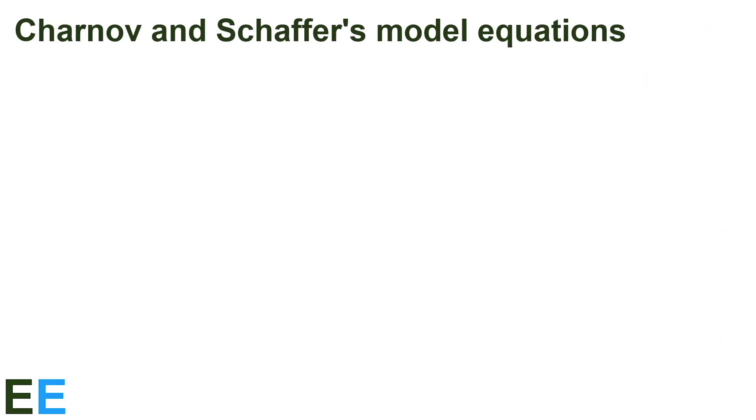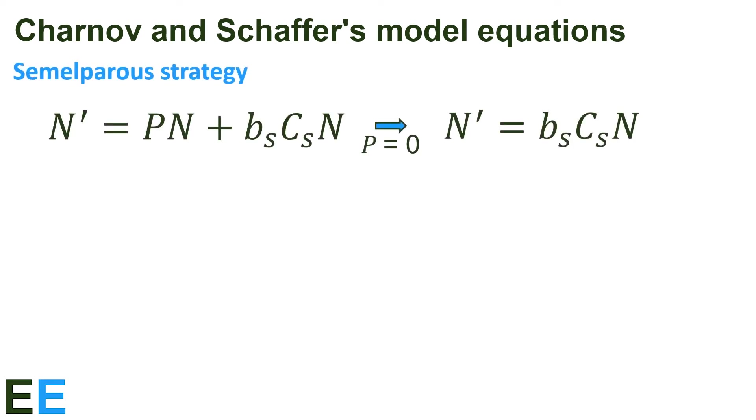In 1973, Charnov and Schaffer published a paper in which they revisited Cole's model, but added in the adult and juvenile mortality terms. I've put a link in the video description to a paper that describes this in more detail, but these are the basics. For the semelparous strategy, we add in a juvenile survival term, the capital C sub S. We will still assume that the adult survival rate is zero, and we get the equation N prime equals B sub S times C sub S times N.